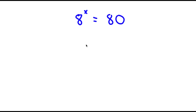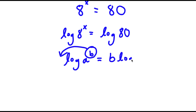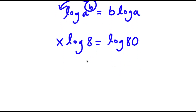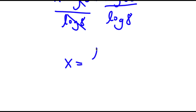In this problem, I have 8 to the power of x is equal to 80. To solve this, I'm going to first start by taking the log on both sides. So I have log 8 to the power of x is equal to log 80. Now if I have something in the form log a to the power of b, I can move this exponent b to the front — so this is equal to b times log a. So I can move x to the front: x times log 8 is equal to log 80. Now I'm going to divide both sides by log 8, and these cancel out, so x is equal to log 80 over log 8.